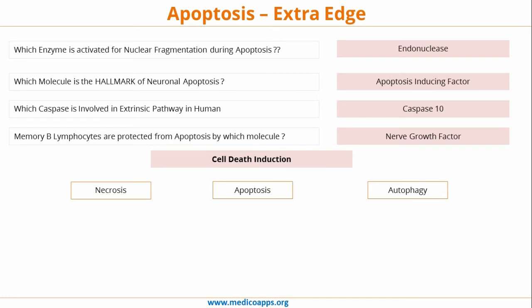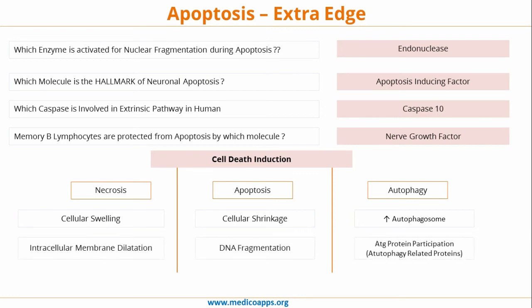Cell death or induction can happen in the form of necrosis, apoptosis, or autophagy. In necrosis there is cellular swelling; in apoptosis there is cellular shrinkage; in autophagy there is an increase in autophagosomes. In necrosis, intracellular membrane dilatation occurs; in apoptosis, DNA fragmentation occurs; in autophagy, ATG (autophagy-related) protein participation occurs. The most critical difference is that in apoptosis and autophagy there is no inflammation, whereas in necrosis inflammation is involved.